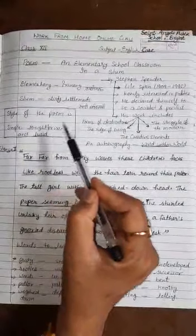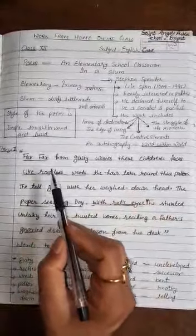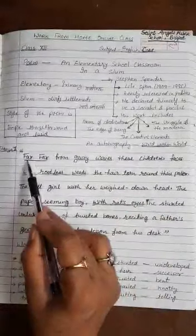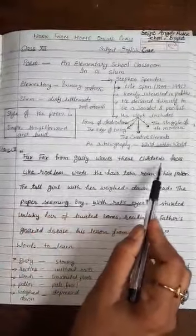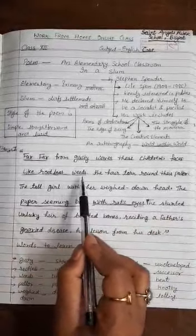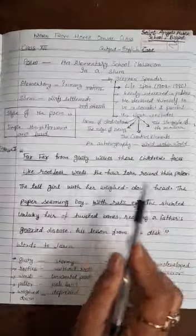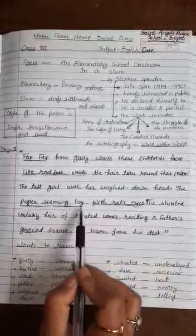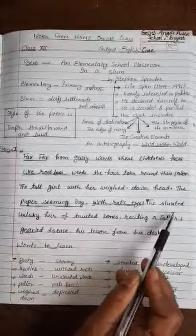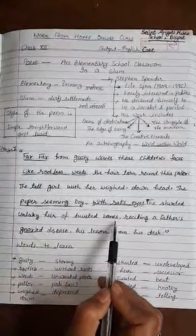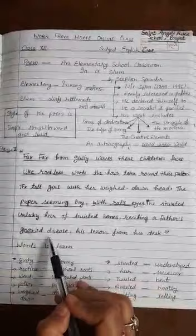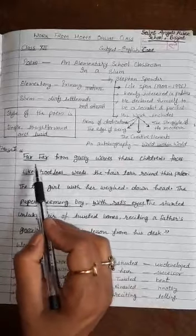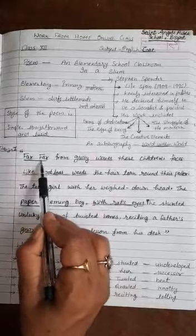The style of the poem is very simple, straightforward, and lucid. Lucid means clear. Now come to the first stanza. The stanza begins with the poetic device repetition. Far, far from gusty waves, these children's faces like rootless weeds, the hair torn around their pallor. The tall girl with her weighed down head, the paper seeming boy with rat's eyes, the stunted unlucky heir of twisted bones, reciting a father's gnarled disease, his lesson from his desk.